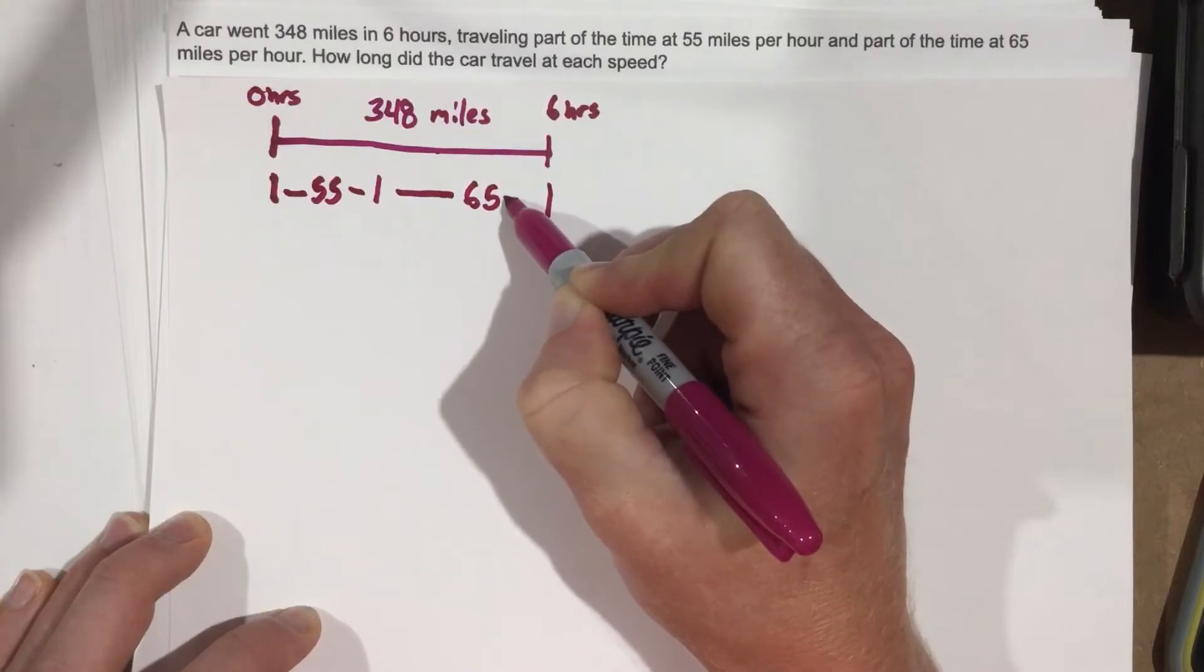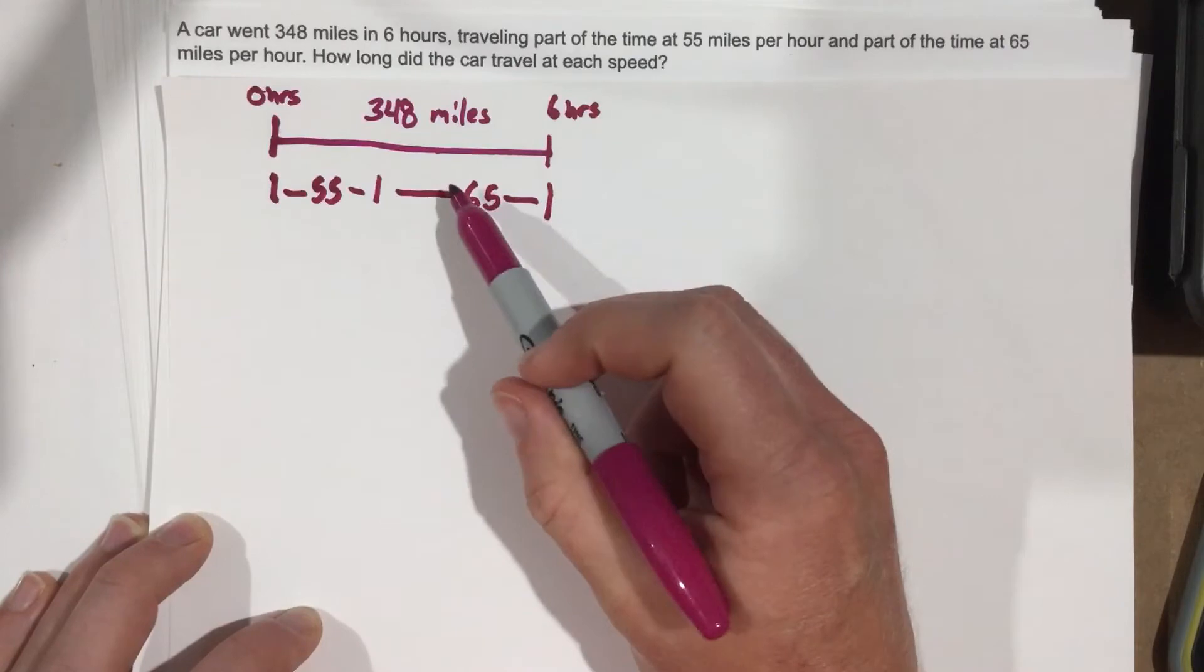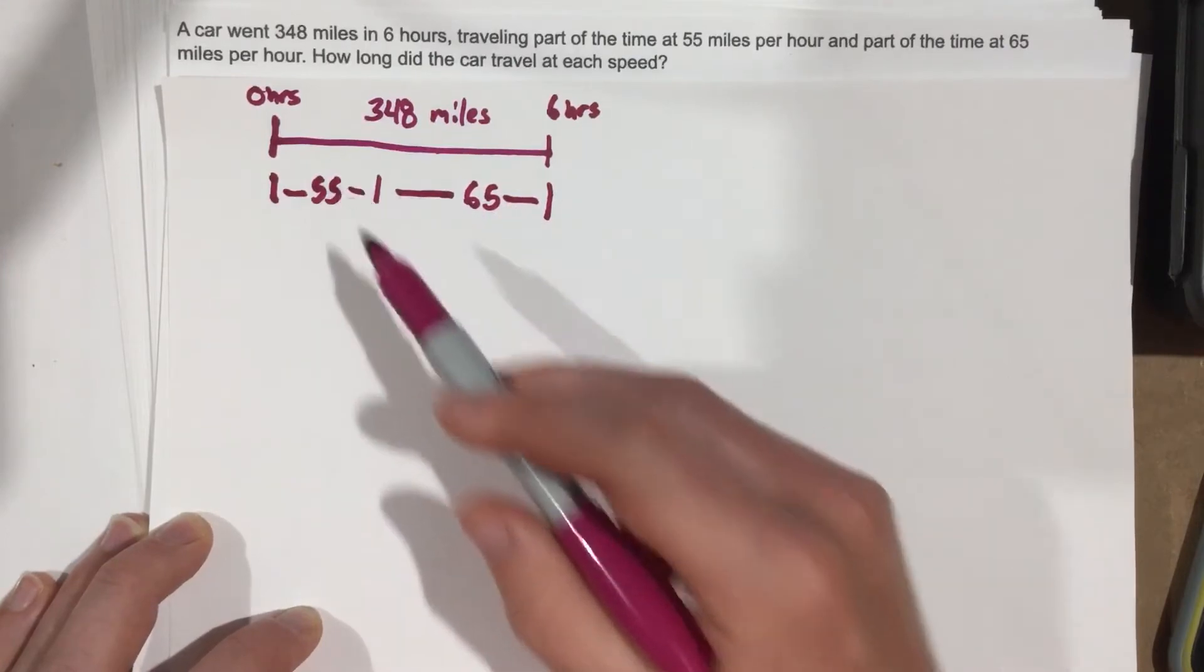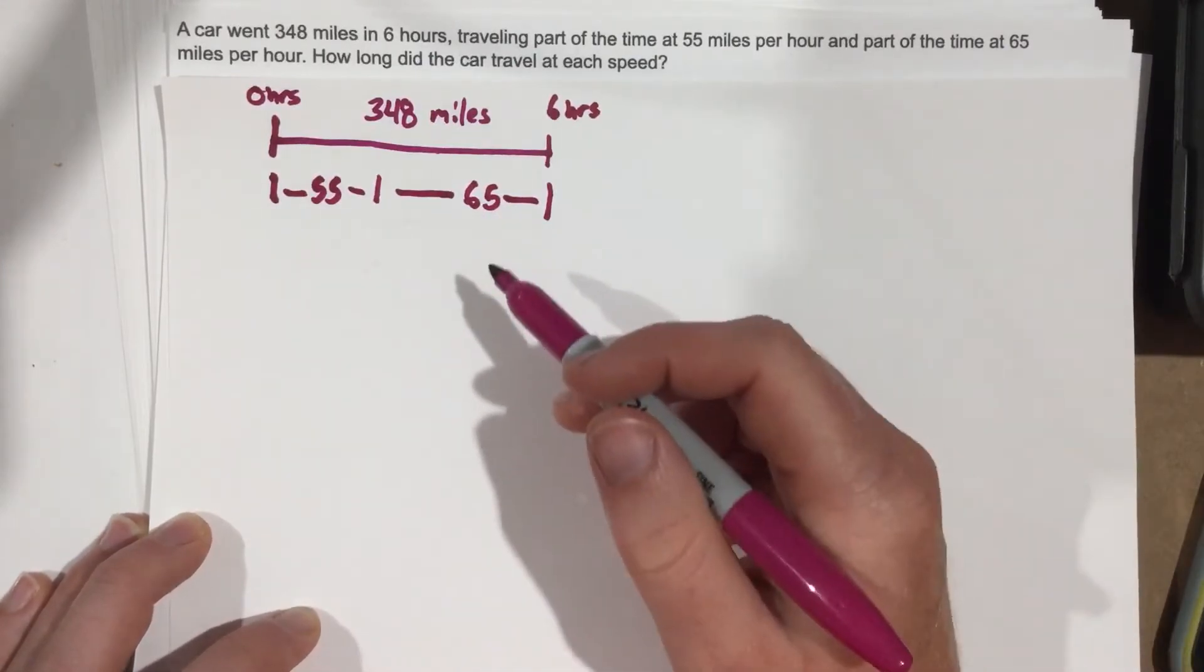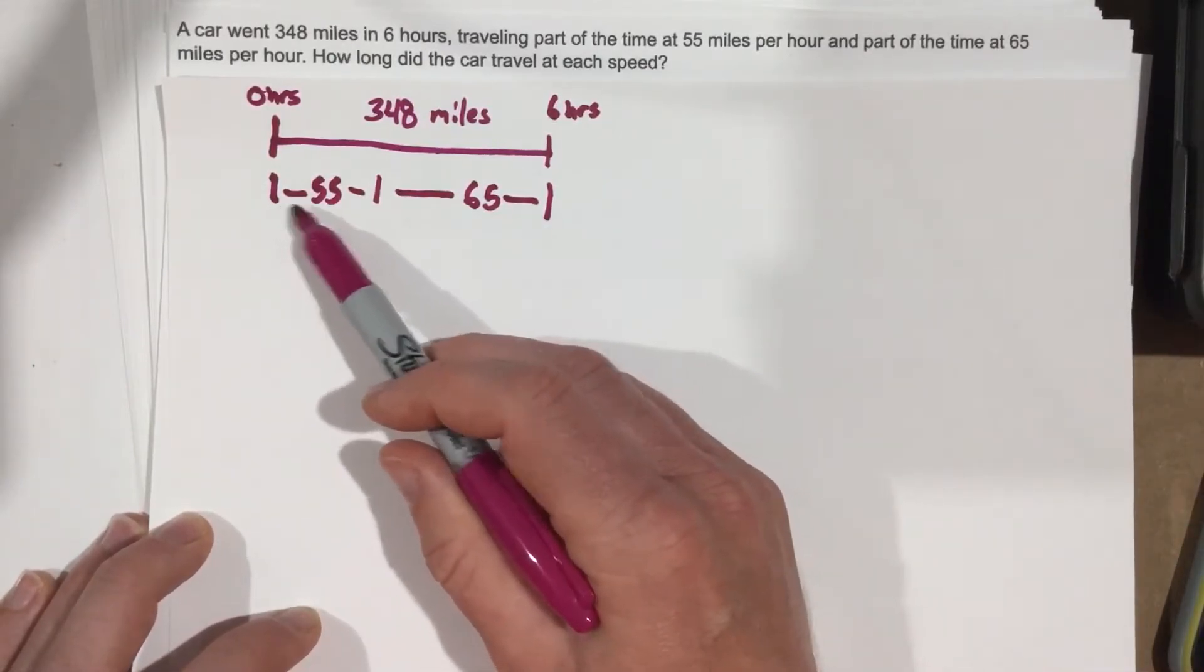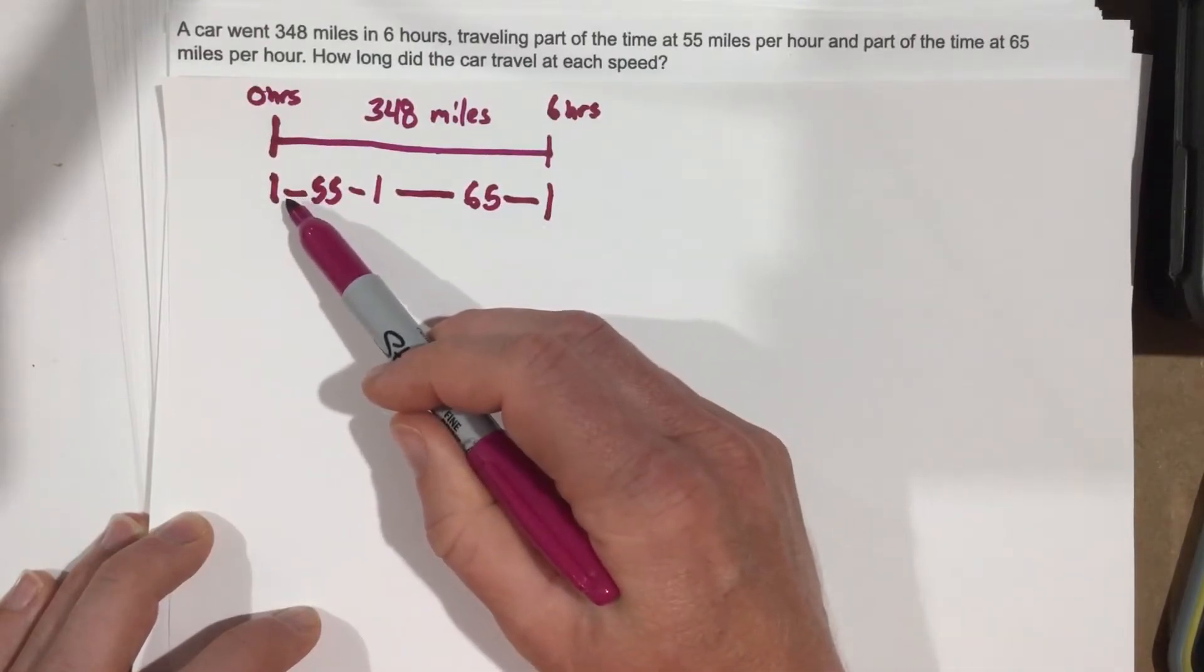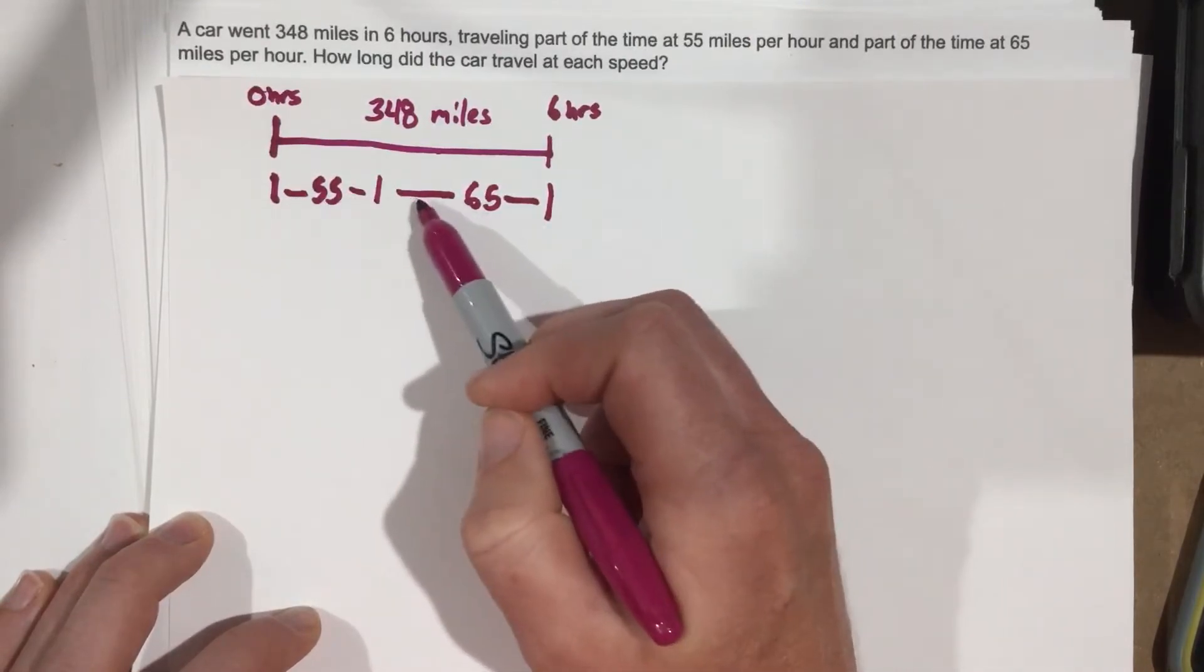Now, I drew this showing 65 being the longer amount of time, but that's not necessarily true. 55 could have been a longer period of time. You just got to kind of pick one. So we know that they're going a certain amount of time at 55 and a certain amount of time at 65, and also a certain distance for 55 and a certain distance for 65.